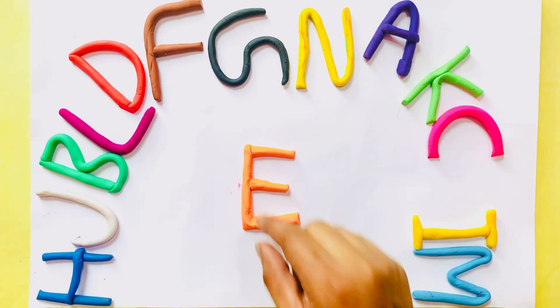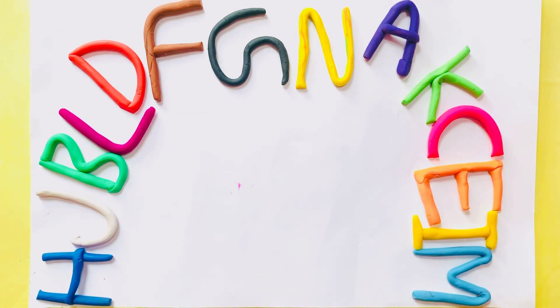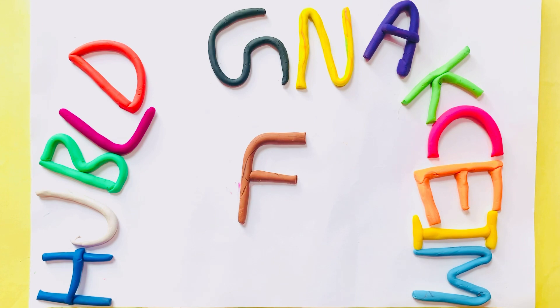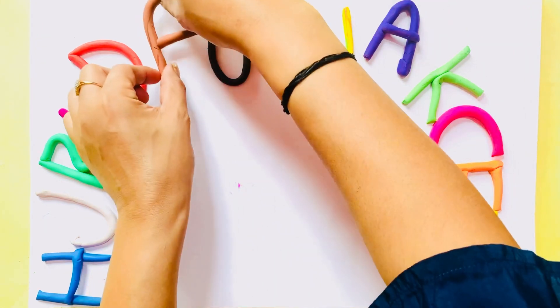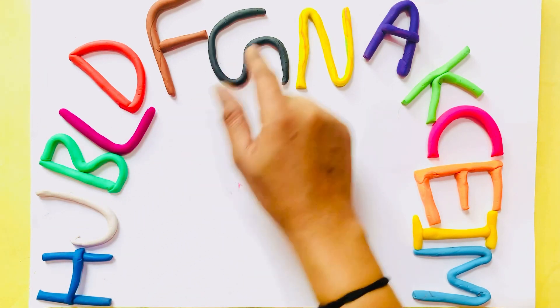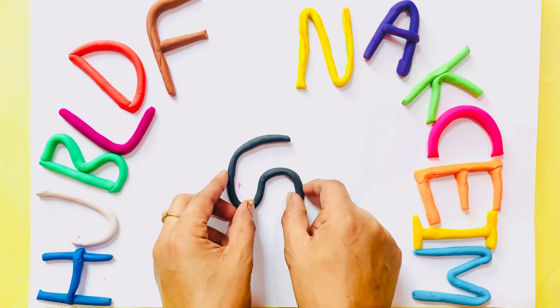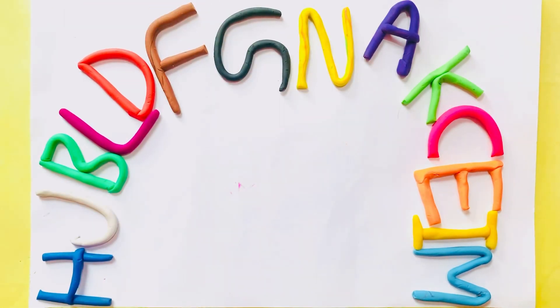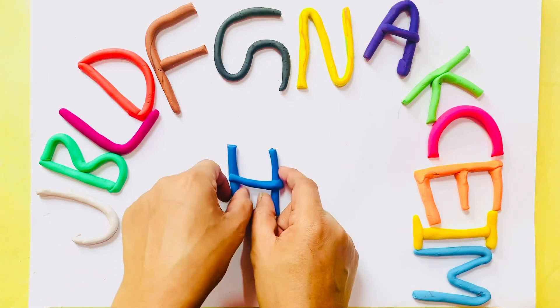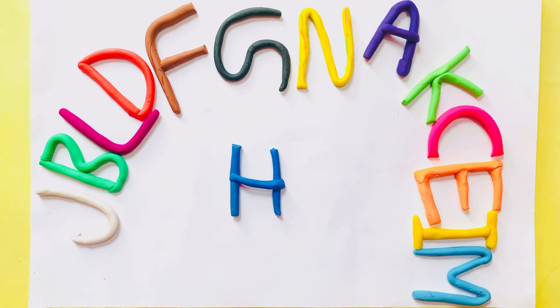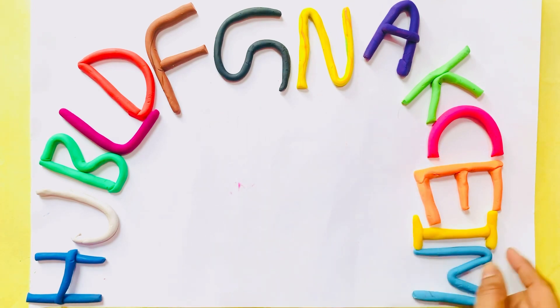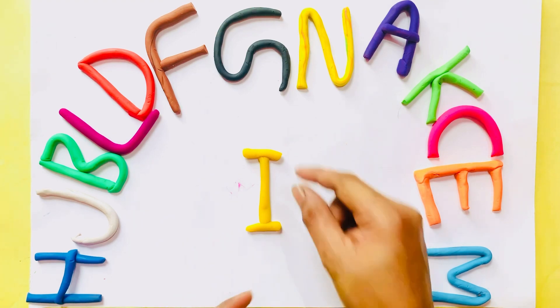F, F for fish, F for fish. G, G for girl, G for girl. H, H for hen, H for hen. I, I, I for ice cream, I for ice cream.